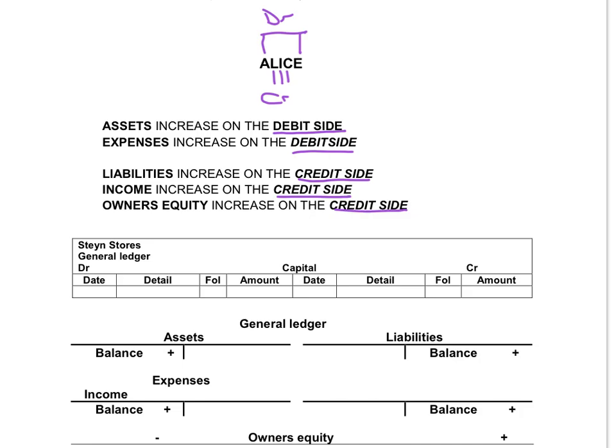In the general ledger, you will open an account for every element. That means for every asset, every expense, every liability, every income — each one of them will have their own account. You will write the name of the account at the top, for instance the capital account. The left-hand side of the account is the debit side and the right-hand side of the account is the credit side.